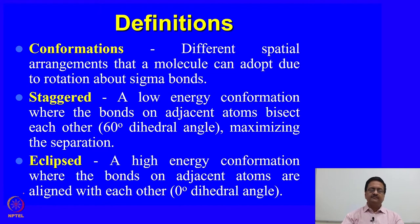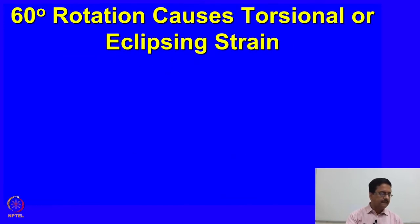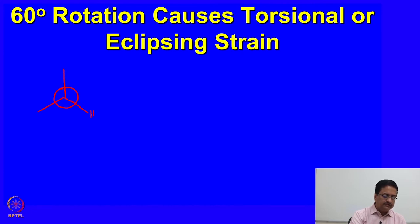In the last class we were talking about various conformations like staggered and eclipsed conformers. We understood that a staggered conformer is a low energy conformation and the eclipsed conformation is one of the high energy conformations. We will try to understand the same using some energy values. When you draw a Newman projection of an ethane molecule in the staggered conformation, as I am drawing here, this is the most stable conformation of ethane.